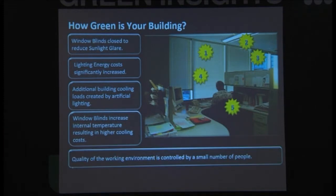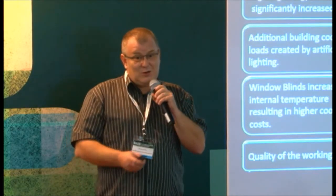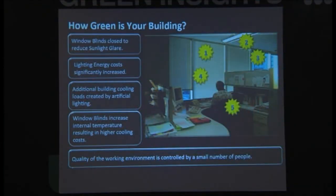And the other thing is that the quality of the working environment gets controlled by a small number of people. So if you sit near the window, you control the window blind. So you're the boss, even though you're not the boss. In commercial offices in Malaysia, we have a tendency to build offices, managers' offices around the perimeter. And everyone else sits in the middle. So if the boss is not happy and he's got too much glare, he closes the window blinds, you get nothing. So one of the big problems.